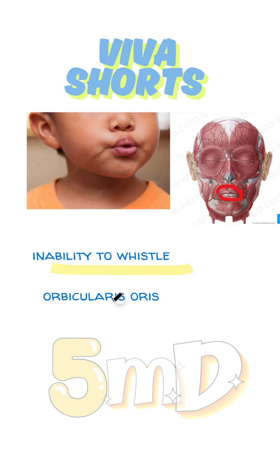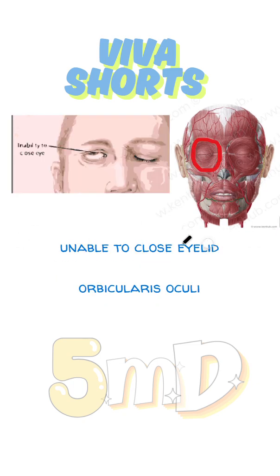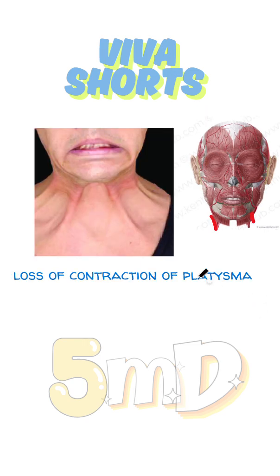Inability to whistle is because of the orbicularis oris muscle, which I have marked here. The patient is also unable to close their eyelids, and even if they shut, the eyelid opens very easily — this is because of orbicularis oculi paralysis. Additionally, there is loss of contraction of the platysma.